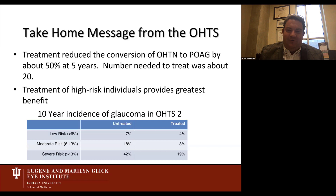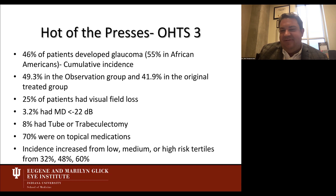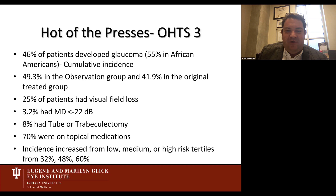OHTS II showed greater benefit treating patients at severe risk of developing glaucoma — not surprising. Risk stratification is one of the major results. Not every ocular hypertension patient is created equal. Risk factors include thin central corneal thickness, pattern standard deviation, high cup-to-disc ratio, and family history. You can Google the Washington University St. Louis OHTS risk calculator to look at your patients' risk for developing glaucoma and individualize your discussion with patients.